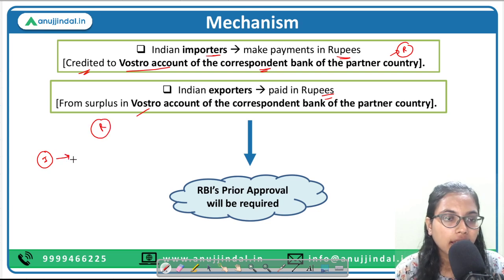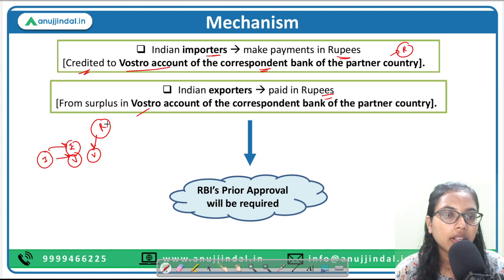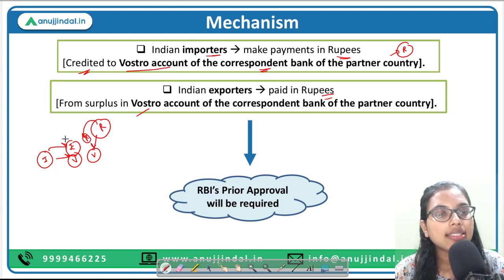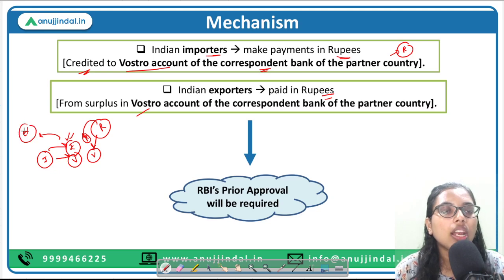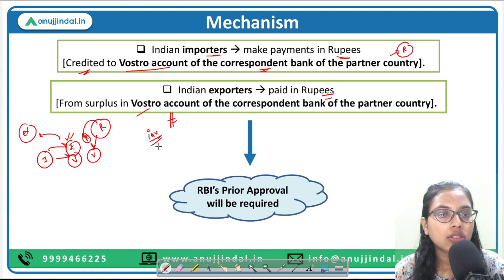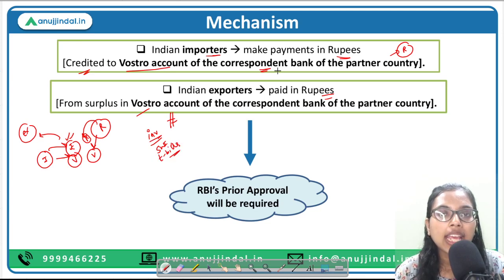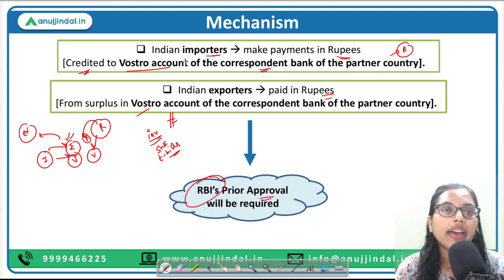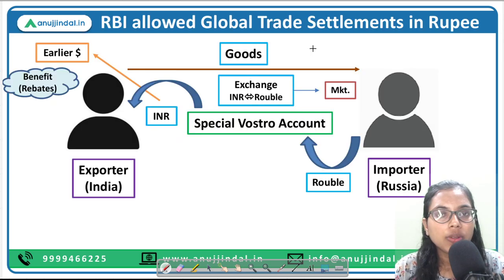For example, when India imports, it deposits certain money in the Vostro account. When Russian importers import from India, they deposit their ruble in their Vostro account. Payments to exporters are made using this balance. Any remaining surplus money in the Vostro account can be used for investment projects, sovereign wealth funds, or T-bills. However, any bank opening a Vostro account must take prior approval from RBI, and only authorized dealer banks can open such accounts.